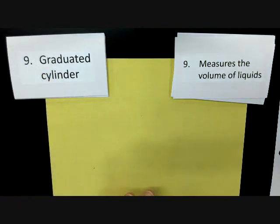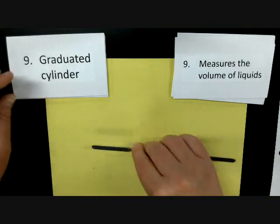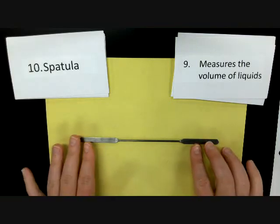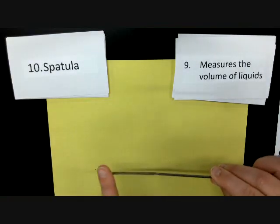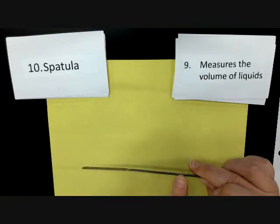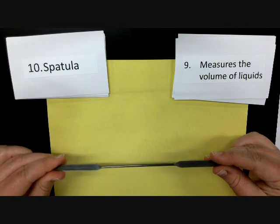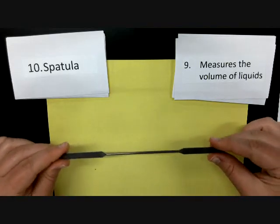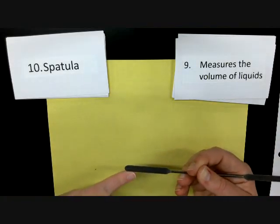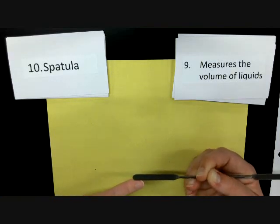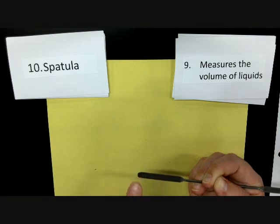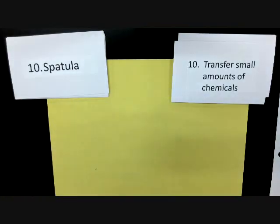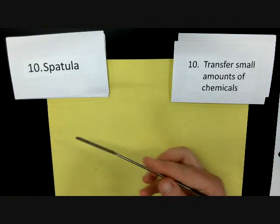Next we have one of our two tools to help transfer chemicals — this is called a spatula. You have spatulas in your kitchen. The way you can identify it is that the end is very flat but in the middle it's rounded on both sides — some people think it looks like a little kayak paddle. The spatula is nice because it will get small amounts of solids and you can transfer those into your test tube. The use of a spatula is to transfer small amounts of chemicals when needed.